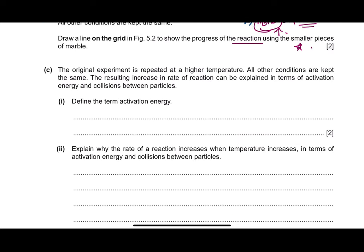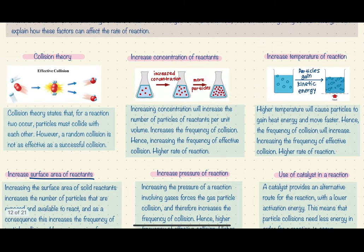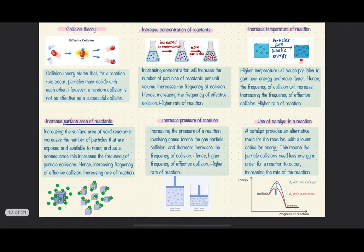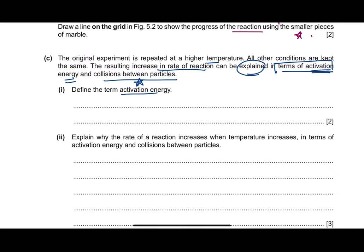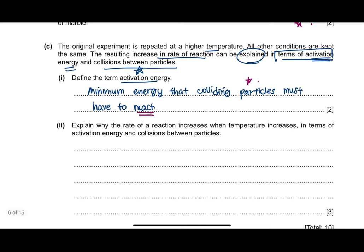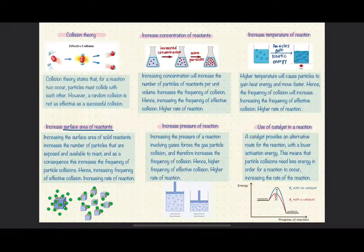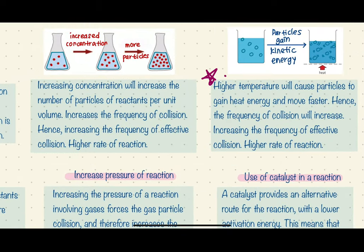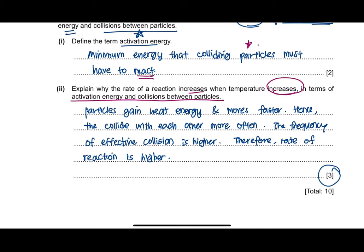Part C repeats the original experiment at a higher temperature, with all other conditions kept the same. The resulting increase in rate of reaction is explained in terms of activation energy and collision between particles. The definition of activation energy is the minimum energy required for the colliding particles to react. To explain why the rate of reaction increases when temperature increases, refer to the notes table covering activation energy and particle collisions — this explanation will achieve a full 3 marks.